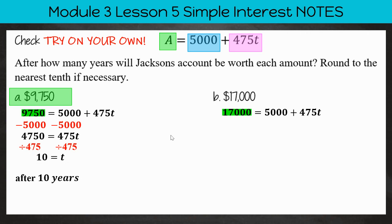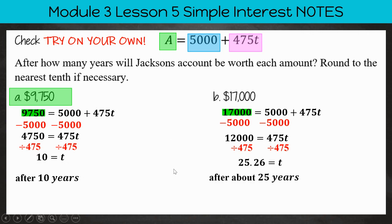In question B, in option B, we need to find out how long it will take for him to reach $17,000. Again, we're going to subtract $5,000 from both sides. Then we're going to divide by $475. And then we find that T is equal to $25.26. Again, I didn't read my own directions that I wrote, where it says round to the nearest tenth if necessary. I rounded to the nearest hundredth. Shame on me. So the correct answer would be $25.3, or after about 25 years, Jackson would have $17,000 in his bank account.